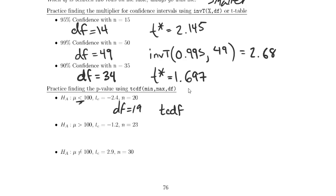So we use the tcdf, and since my alternative hypothesis is lower than the claimed value, I'm going to go from negative 9999 up to negative 2.4 with a df of 19, and that gives me 0.0134. So in that case, I would have evidence for the alternative hypothesis.